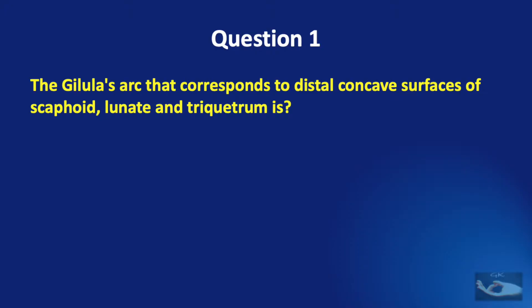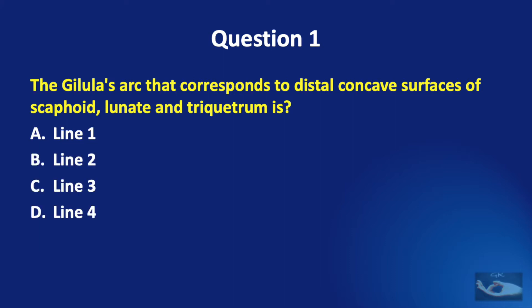Question number one. The Gilula's arc that corresponds to the distal concave surfaces of the scaphoid, lunate and triquetrum is: line one, line two, line three, or line four?